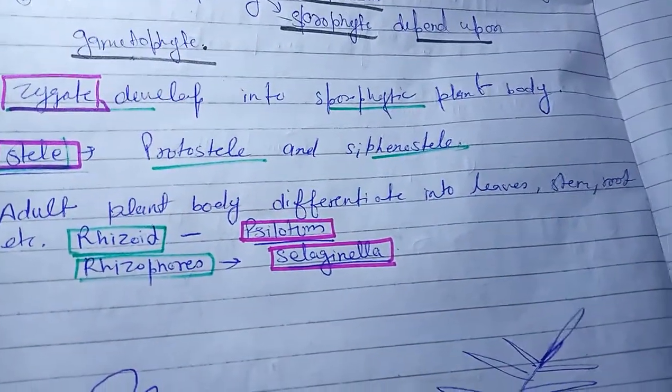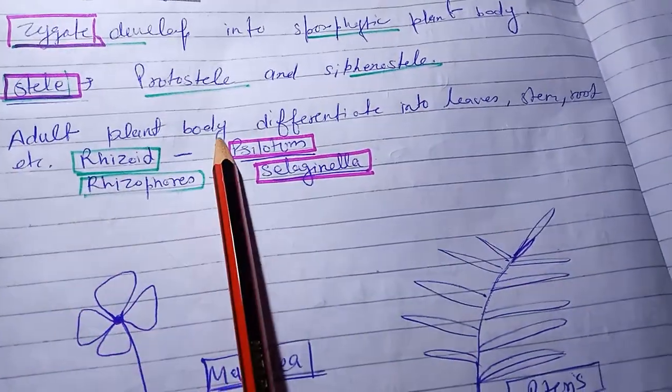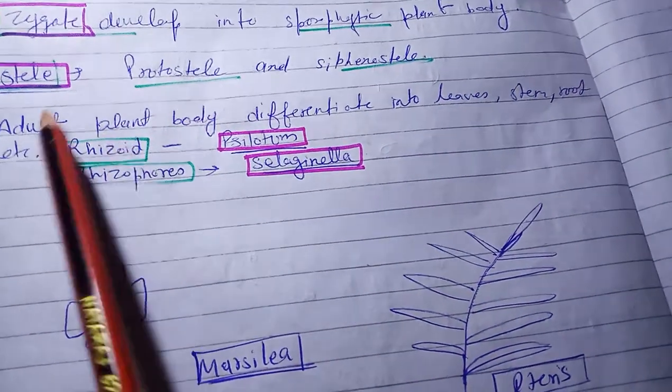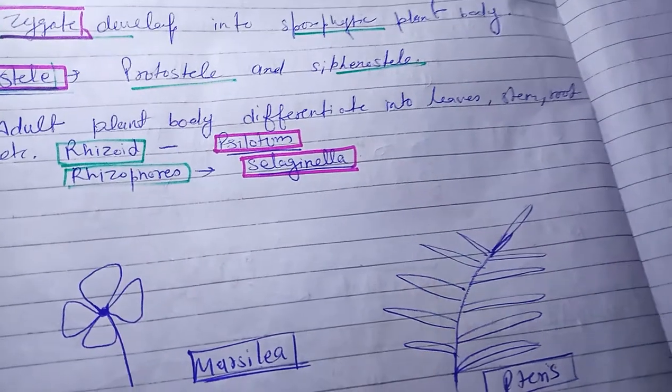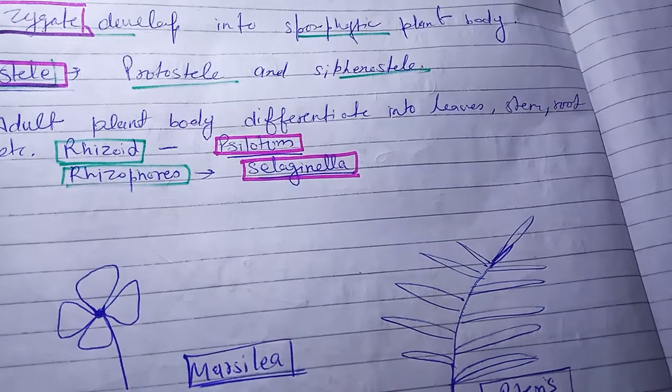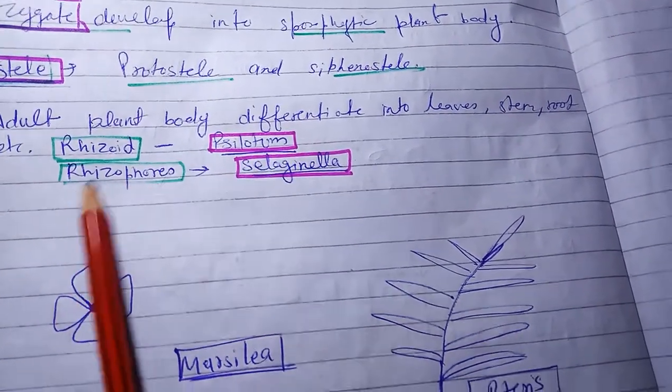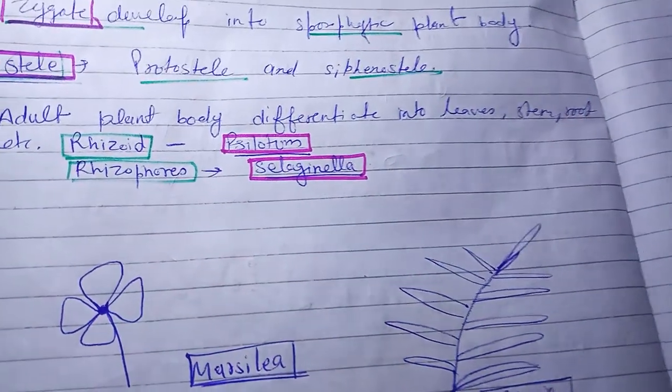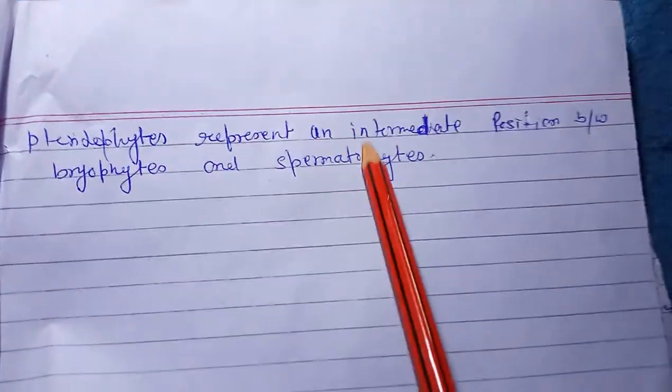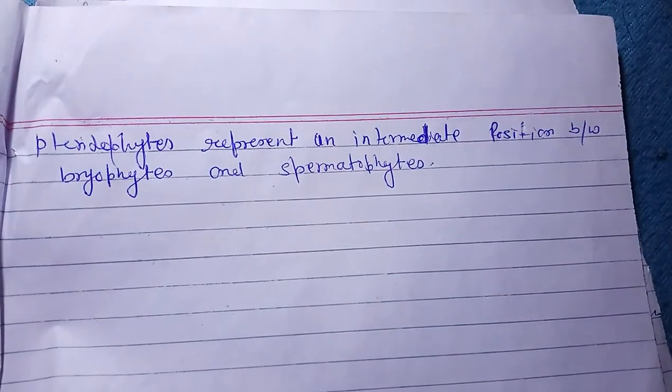Adult plant differentiates into root, stem, leaves with the help of rhizoid for absorption. Rhizoid in Psilotum, ciliated sperms and rhizophores in Selaginella. Pteridophyta is represented in the intermediate position between Bryophyta and Spermatophyta, which is gymnosperm plants.